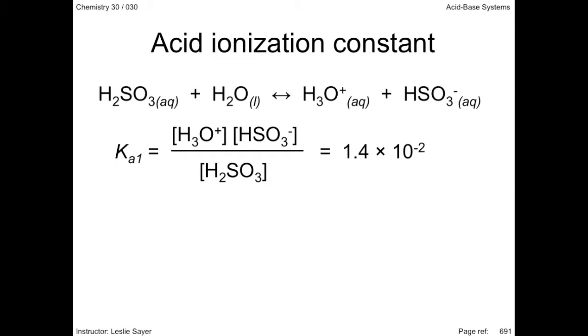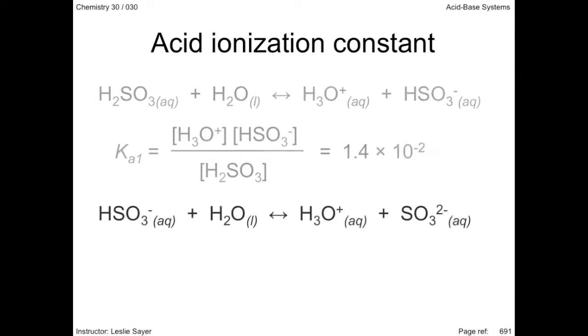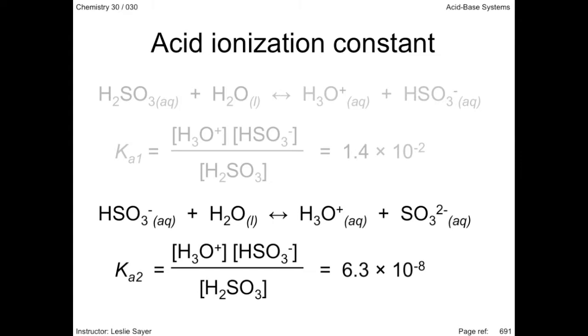I wrote Ka1 because this particular reaction involves a diprotic acid, so there is a second acid ionization expression and a second acid ionization constant. The ionization of the hydrogen sulfite ion produces hydronium ions and sulfite ions. The second acid ionization constant from your data booklet is 6.3 times 10 to the negative 8.